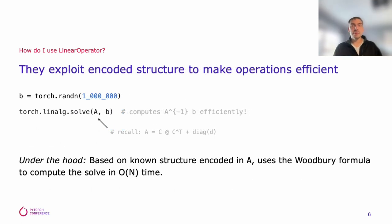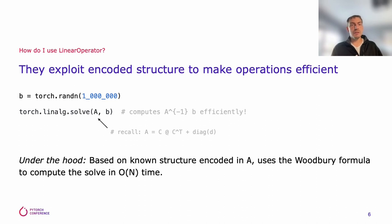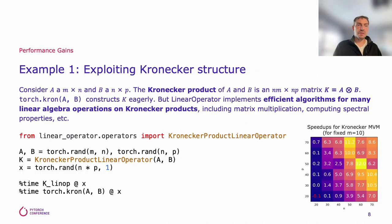That allows us to perform computations much more efficiently, both in terms of time and memory complexity. For instance, for our example A from the previous slide, if we call solve on this with some right-hand side B, then it would automatically use the Woodbury matrix identity under the hood to compute the solve in O(n) time rather than O(n³). And for n equal to a million, this means massive speedups, not to mention not having to instantiate that matrix.